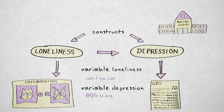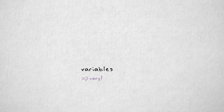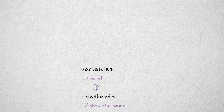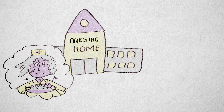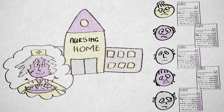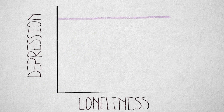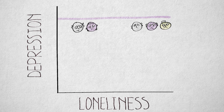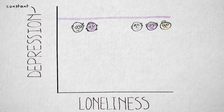Variables are measured or manipulated properties that take on different values. This last bit is important — a variable's values need to vary, otherwise the property isn't very interesting; it's a constant. Suppose the nursing home is so horrible that all residents get the maximum depression score. Then we cannot show a relation between loneliness and depression, at least not in this group of subjects. Both lonely and less lonely people will be equally depressed. Depression is a constant.